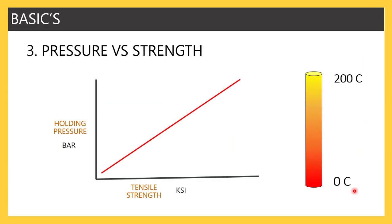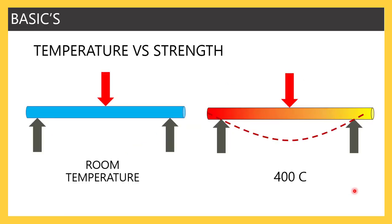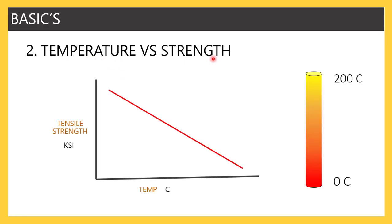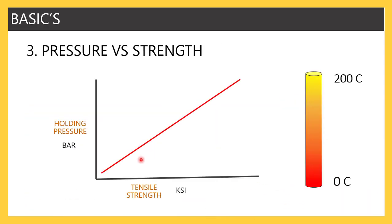Now let's understand the relationship between pressure and strength. What we found is that when you increase the temperature, the strength goes down. Now, imagine you are increasing the temperature for a particular pipe or cylindrical component — naturally the strength of the component goes down. In that case, when the strength of the component is low, will you be able to put more pressure in it? No, because the strength of the component is weak. The graph represents this: here tensile strength is on the horizontal plane and pressure is on the vertical plane. Higher pressure is only possible when your tensile strength is too high. If your tensile strength is too low, you can't hold higher pressure because the material has to be stronger to hold higher pressure.